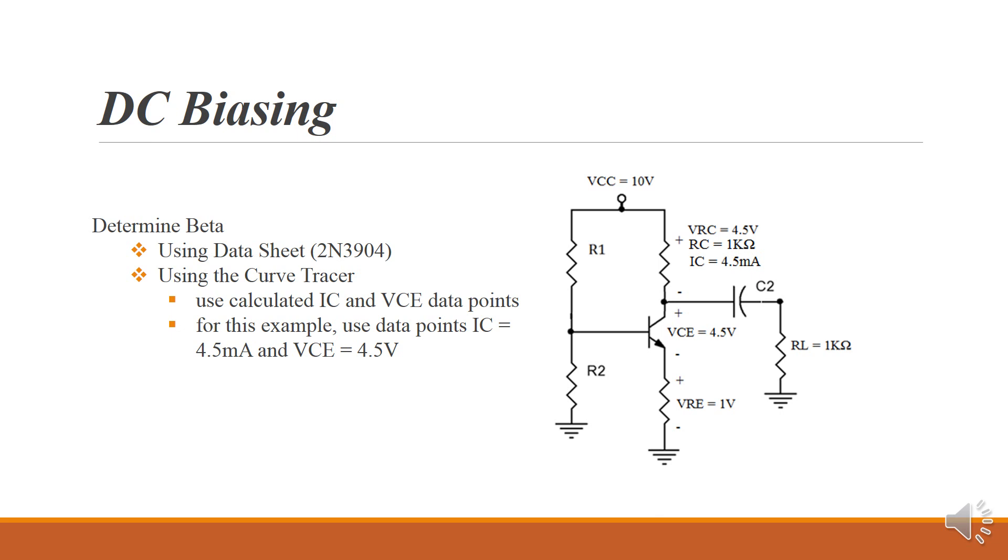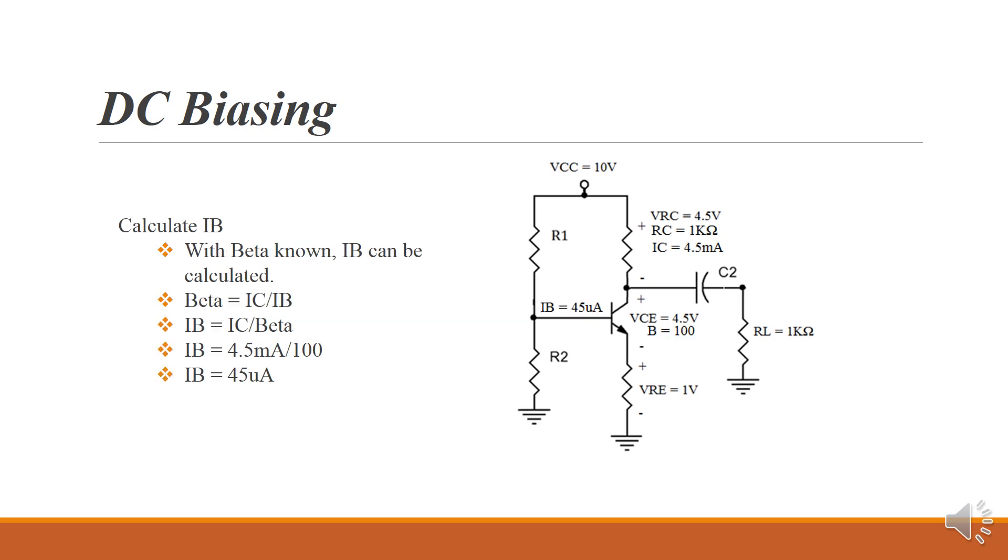For my students, I expect them to use our curve tracer with the data points of collector current set at 4.5 milliamps and VCE 4.5 volts. That will get you a really accurate beta for that specific transistor. If you don't have a curve tracer, then just use the datasheet.